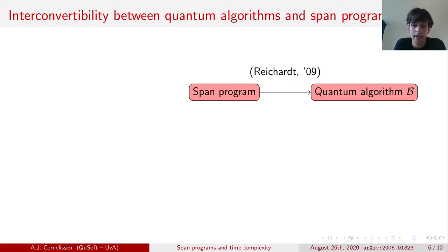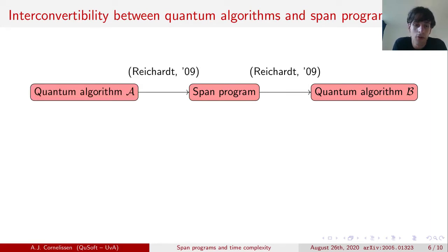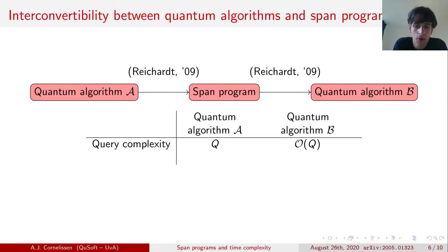We have now seen a rough sketch of how we can take a span program and turn it into a quantum algorithm. This construction was invented by Reichardt in his paper in 2009. In the same paper, he observed that the converse is possible as well — namely, we can take a quantum algorithm and turn it into a span program. So this makes the following construction possible: we take any quantum algorithm A, turn it into a span program, and then turn it back into a quantum algorithm B. Reichardt showed that this is possible without incurring too much overhead in the query complexity — specifically, the query complexity of B is only a constant factor worse than that of A. This proves that for every boolean function f, there exists a span program that generates a quantum algorithm evaluating f with optimal query complexity.